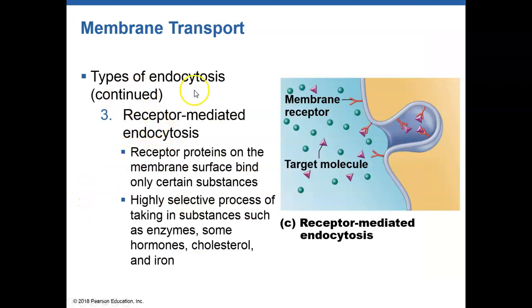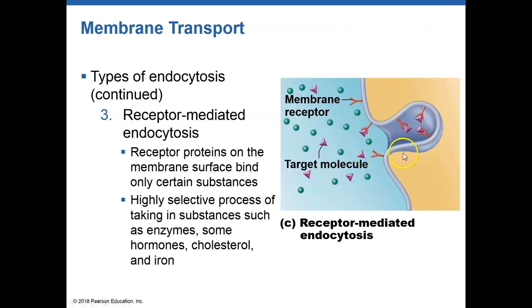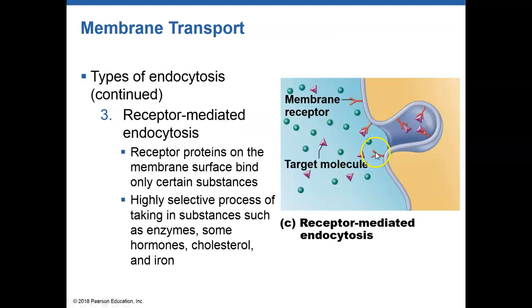The last type of endocytosis is receptor-mediated endocytosis — a specialized endocytosis in which certain molecules bind to proteins on the plasma membrane. Once these proteins have been bound, a vesicle forms surrounding those bound proteins and pulls the materials into the cell. It is a selective process — which is why it's called receptor-mediated — because materials must bind to specialized receptors on the cell. This is how we move cholesterol from our blood into our cells to avoid high cholesterol levels.